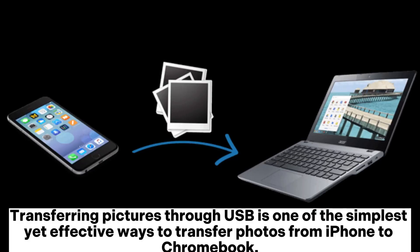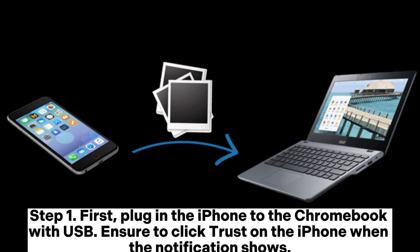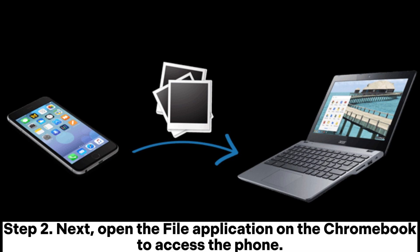Transferring pictures through USB is one of the simplest yet effective ways to transfer photos from iPhone to Chromebook. Step 1. First, plug in the iPhone to the Chromebook with USB. Ensure to click Trust on the iPhone when the notification shows.